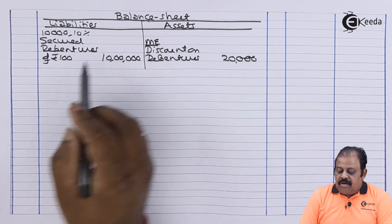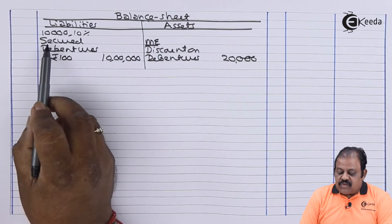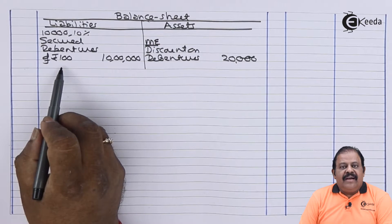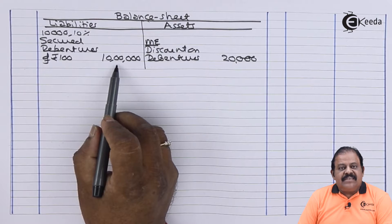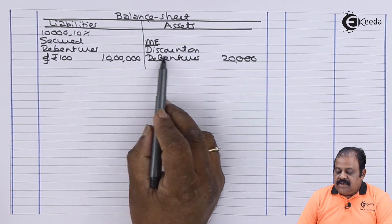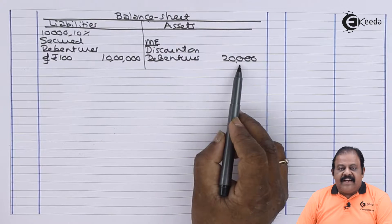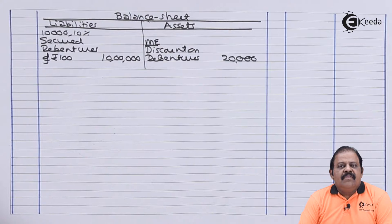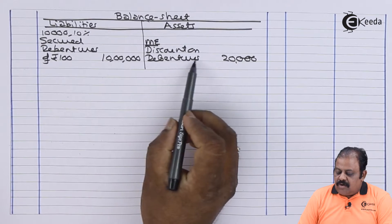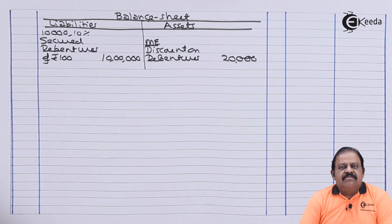In the balance sheet, on the liability side, we will be disclosing 10,000 10% secured debentures of Rs. 100 each, amount is 10 lakhs. On the asset side, under the heading miscellaneous expenditure, discount on debenture will be indicated at Rs. 20,000. As per the revised format of the balance sheet as per Companies Act, discount on debenture is a fictitious asset, so it will be indicated under the heading non-current assets.